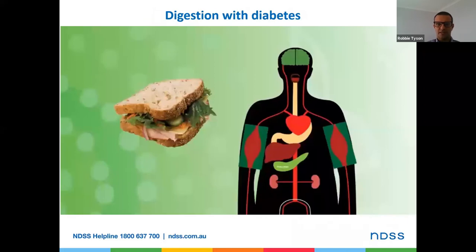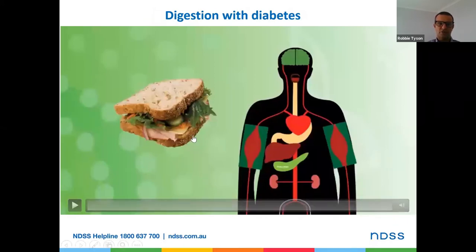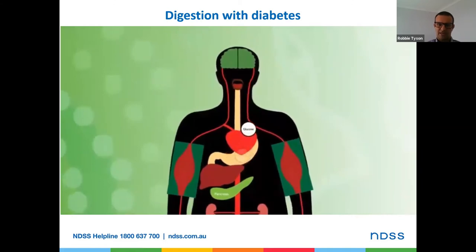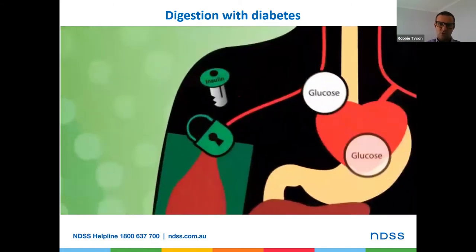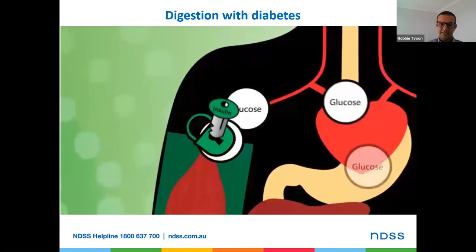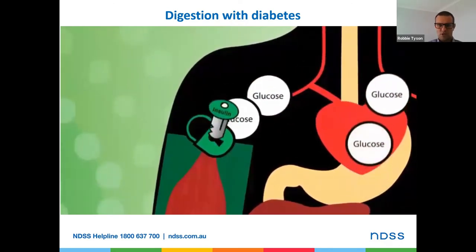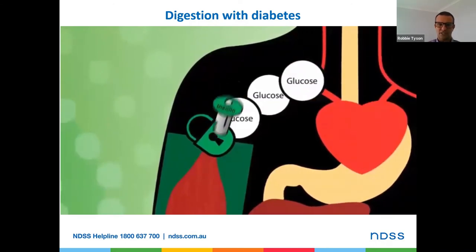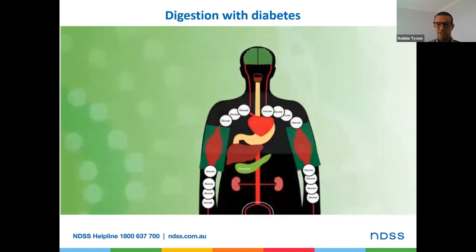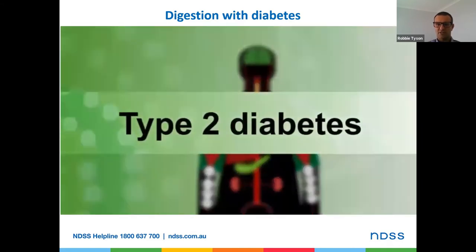Now let's look at digestion in the body and what happens when someone's living with diabetes. With a carbohydrate food like bread, the body breaks it down and glucose released from the carbohydrate passes through the stomach and into the bloodstream, elevating blood glucose levels. Insulin is the key that unlocks the lock to let that glucose into the cells of the body. In diabetes, that key isn't working very well — the glucose in the blood builds up, the locks become sticky, and this is insulin resistance.